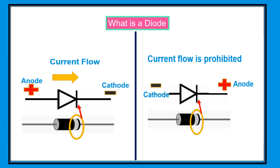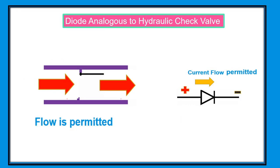Diode was the first semiconductor electronic device. The discovery of crystal rectifying abilities was made by German physicist Ferdinand Braun in 1874. The first semiconductor diodes, called the Katz-Wesker diode, were made of crystals of minerals such as galena.